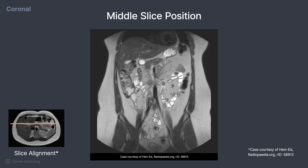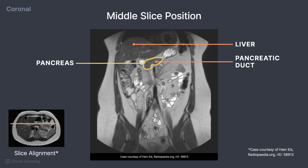A small structure on this image is the pancreas, which is located right in the center, just underneath the liver. You can see a faint white line indicating the pancreatic duct.